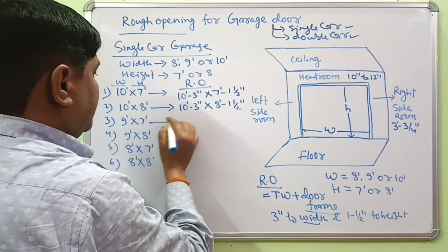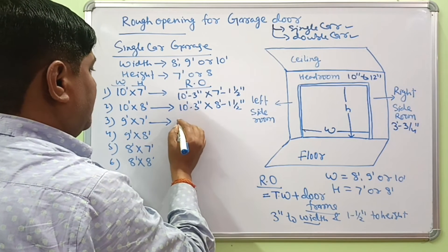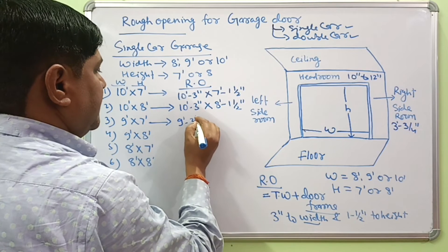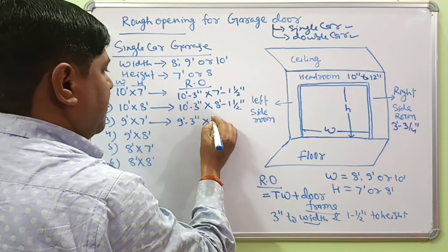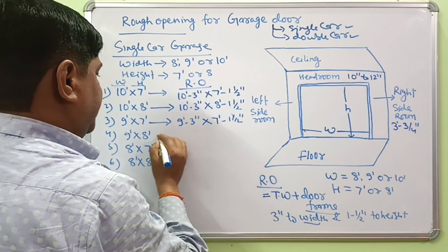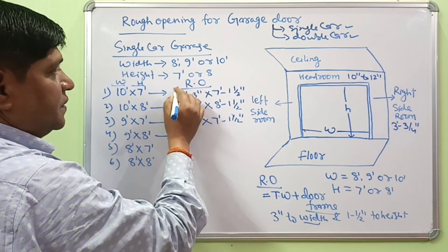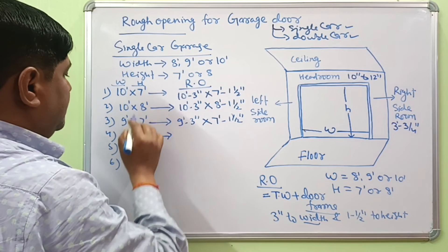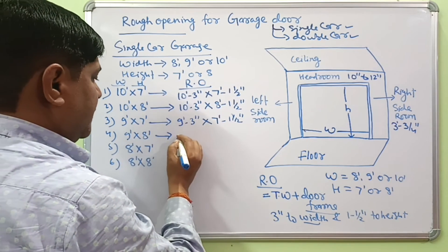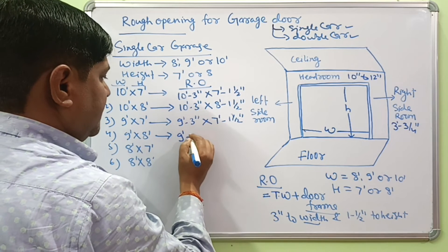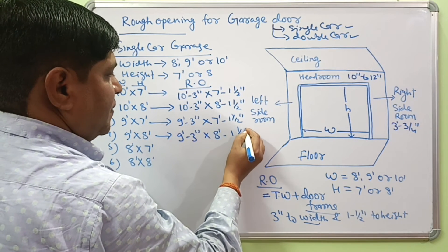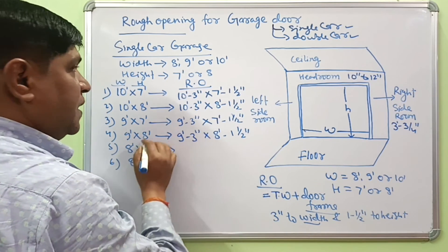For a 9x7 foot single car garage, the rough opening will be 9 foot 3 inches by 7 foot 1 and a half inches. If your single car dimension is 9 foot by 8 foot, the rough opening will be 9 foot 3 inches by 8 foot 1 and a half inches.